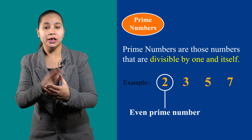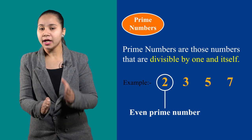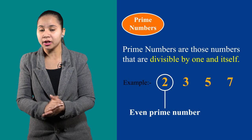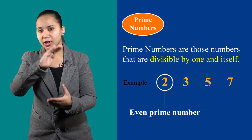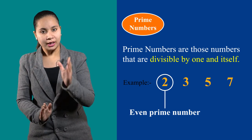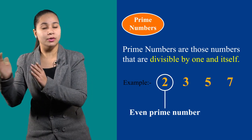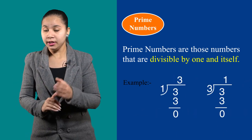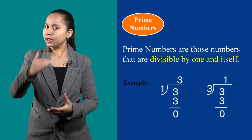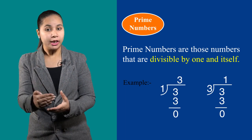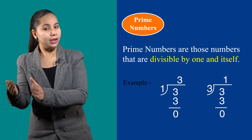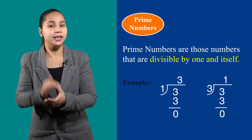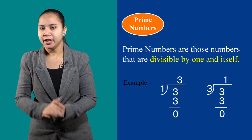Two is the only even prime number. Even numbers means numbers that are divisible by 2, and that is why 2 is the only even prime number. Three is also a prime number because 3 is divisible by 1 and by itself. And that is why 3 is a prime number.